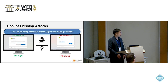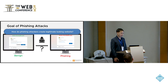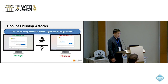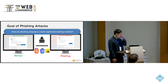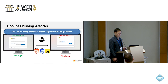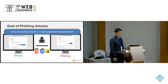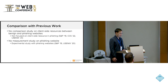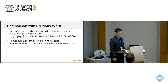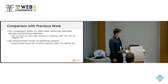This brought us to our research question: how do phishing attackers create legitimate-looking websites? We assume they may copy the client-side resources from the benign website, such as HTML, CSS, or JavaScript libraries. There hasn't been any previous work we found about client-side resource comparison between phishing websites and benign websites.